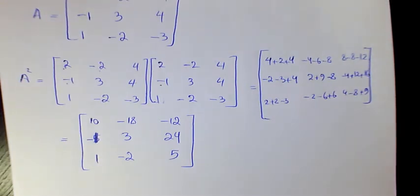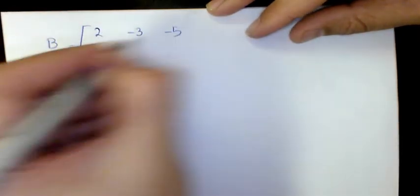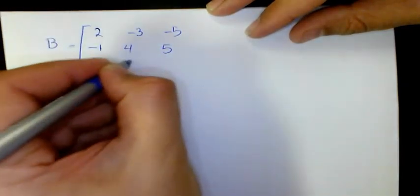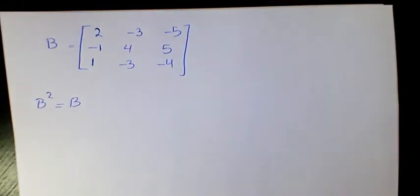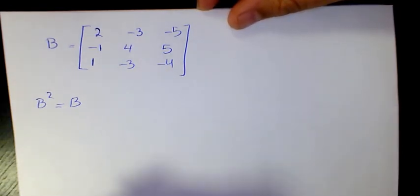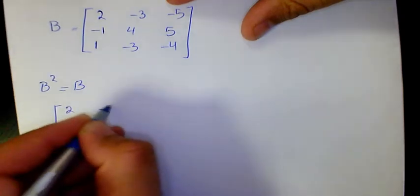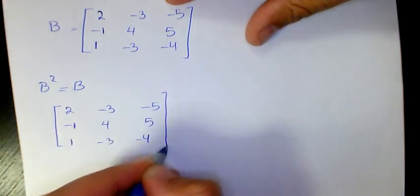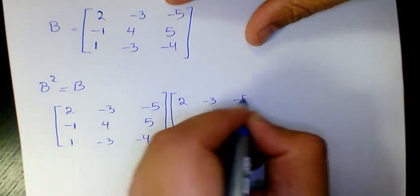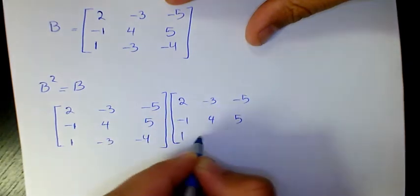So this matrix result is different from the first one, so it is not an idempotent matrix — they are not the same. Let's have another example. B equals two, negative three, negative five, negative one, four, five, one, negative three, and negative four. So B squared must equal B in order to have an idempotent matrix. So we need to multiply these two matrices together.